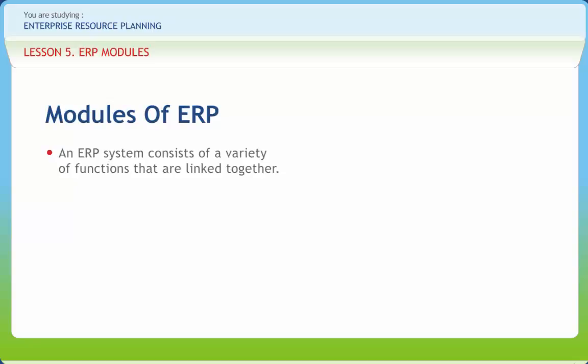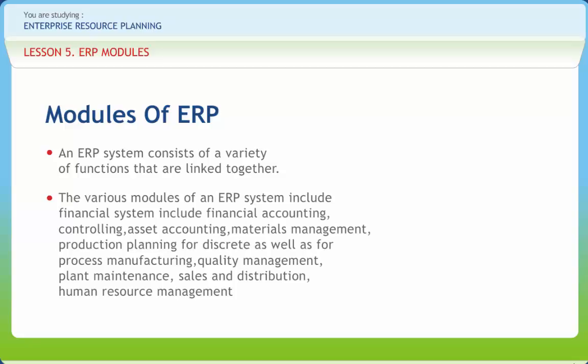An ERP system consists of a variety of functions that are linked together. The various modules of an ERP system include Financial System, Financial Accounting Controlling, Asset Accounting, Material Management, Production Planning for Discrete as well as Process Manufacturing, Quality Management, Planned Maintenance, Sales and Distribution, Human Resource Management, and Project Management. Although ERP features vary by application, the typical ERP functionality covers these core enterprise functions and associated sample modules.